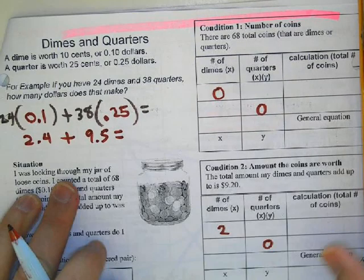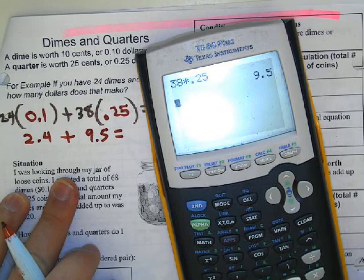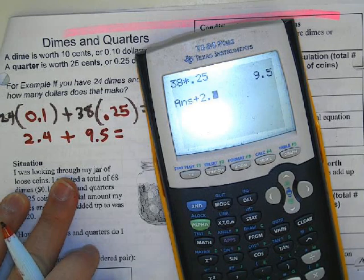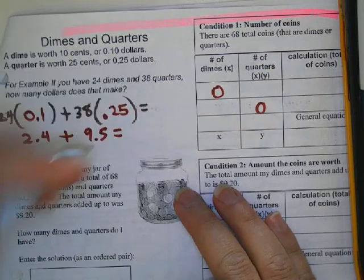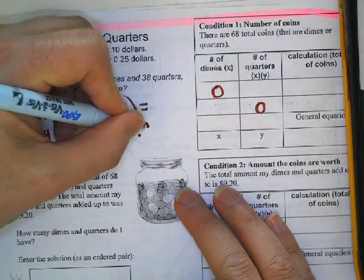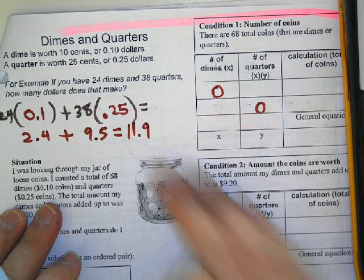We add 9.5 and 2.4, and we get 11.9. So we're going to have to do that for our equation over here.